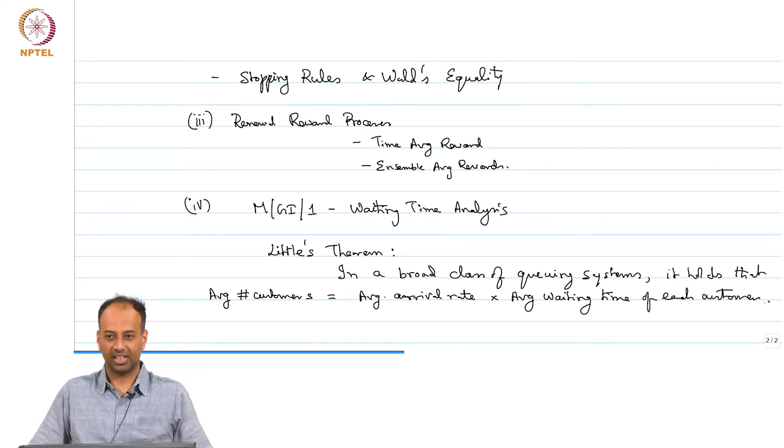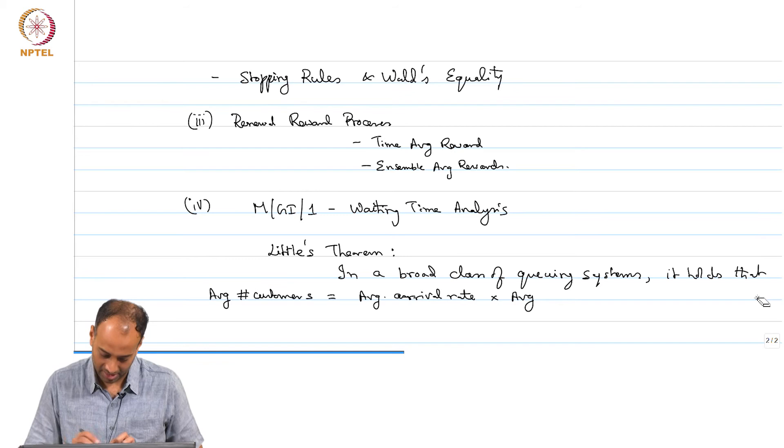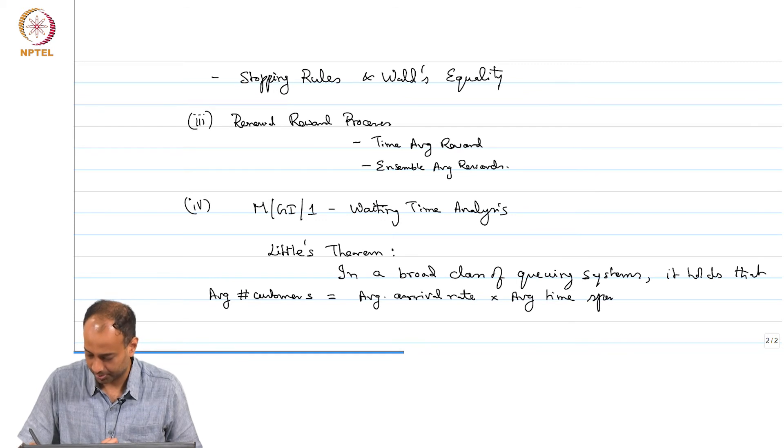In plain English Little's theorem says that if you have almost any queuing system, I am not making this any precise, I have said broad class of queuing systems. Certainly, it is true in G/G/1, it is true even more broadly in some cases. It holds that the average number of customers in the system is equal to average arrival rate times the average time spent in the system. Maybe I should write average time instead of waiting time which means waiting in the queue, I should probably say average number of customers equal to average arrival rate times average time spent in the system.